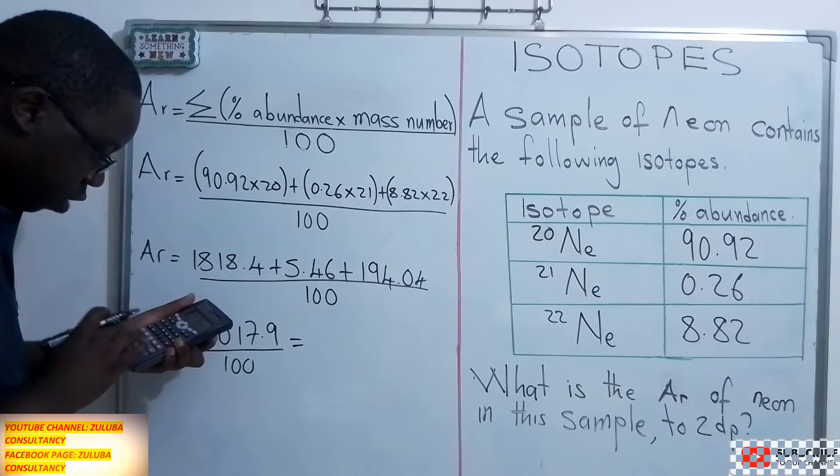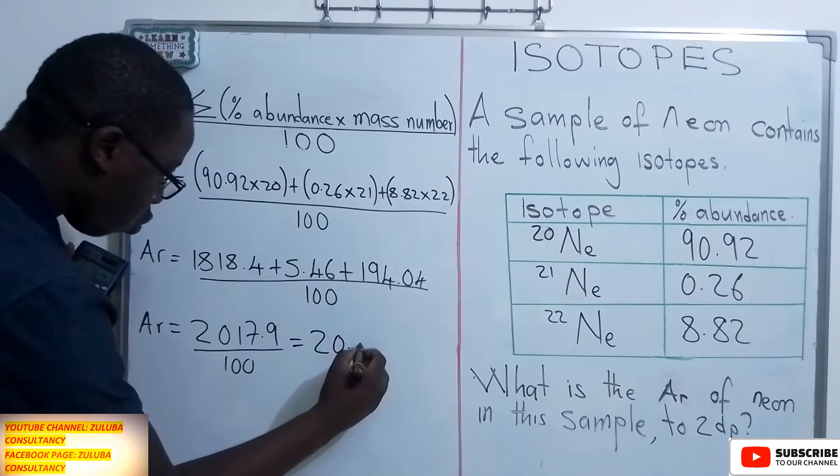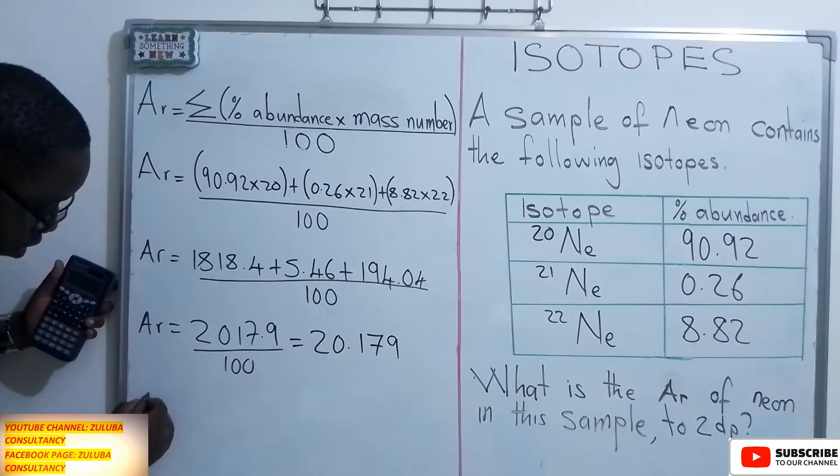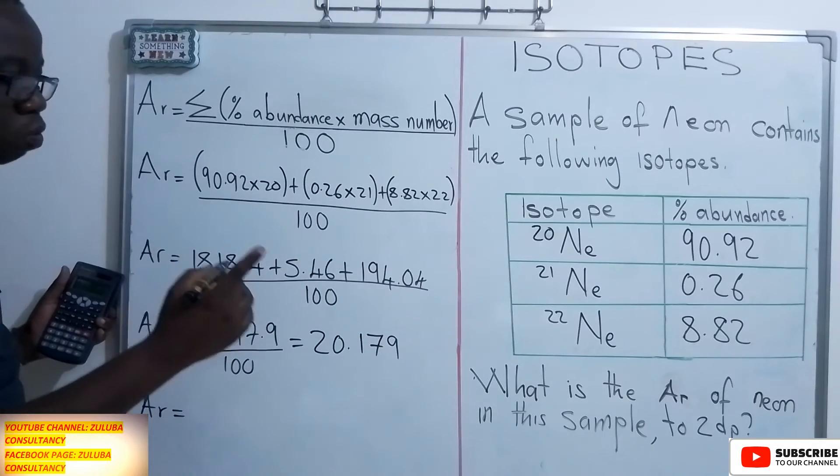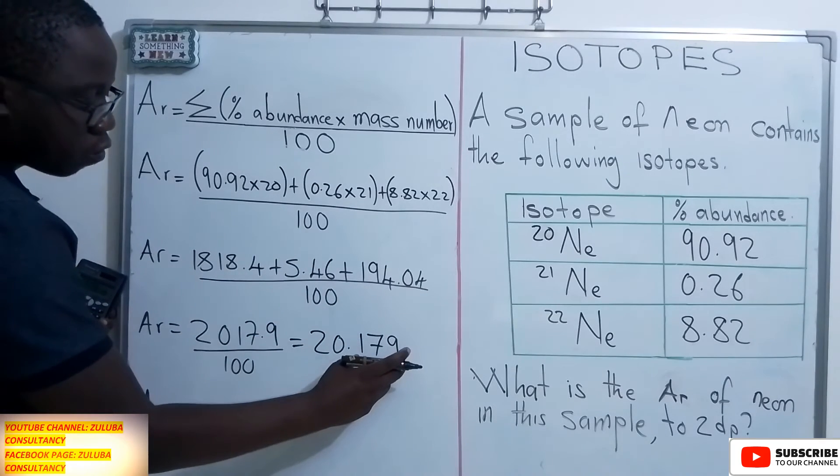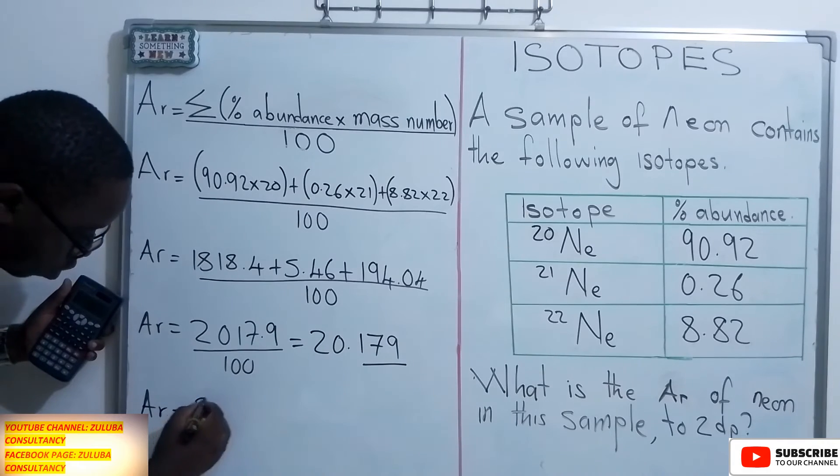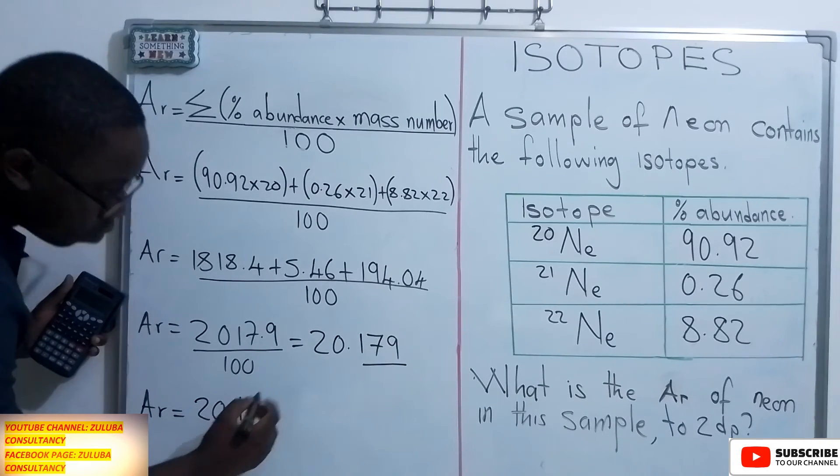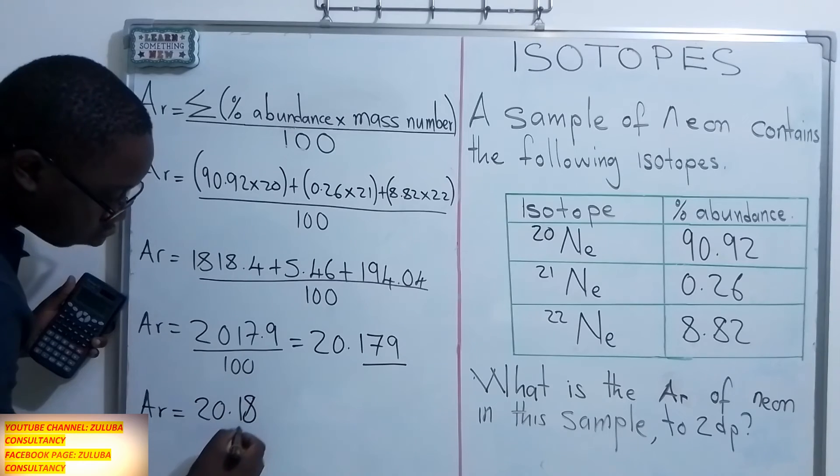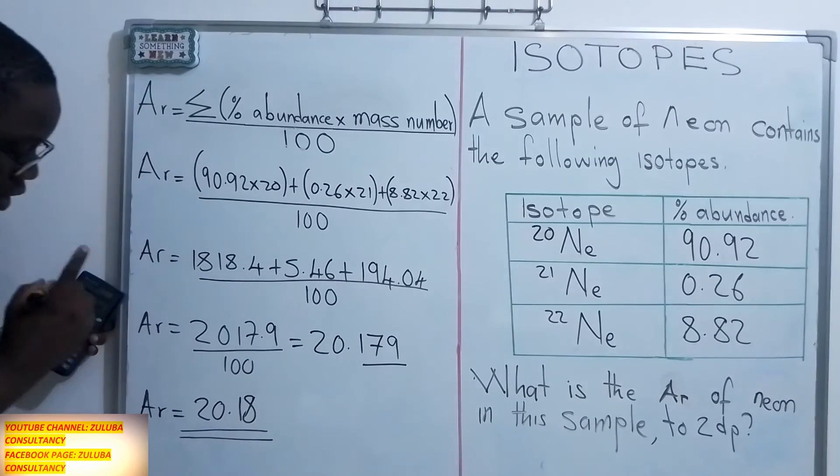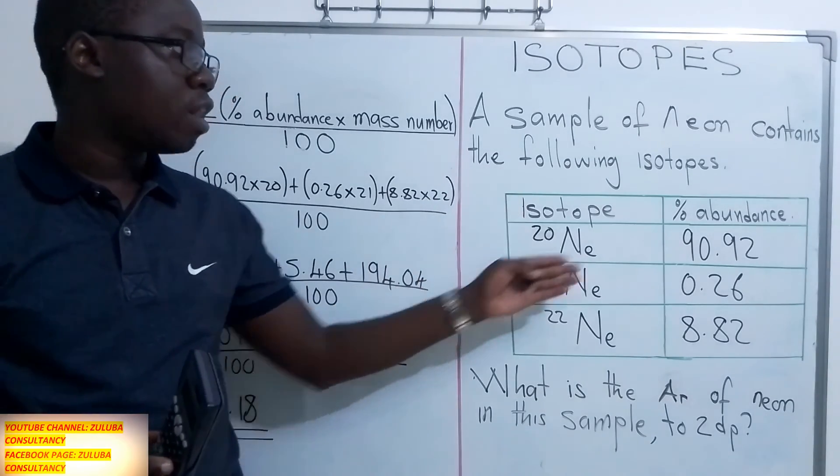it is going to give us the answer of 20.179. Now, remember the question has asked us that we should put our answer in 2 decimal place. So we need to round off this number here and have only 2 decimal places. So it will be 20.18. Because this number is 9, then it will affect the next number and it will change to 8. So this becomes the relative atomic mass of neon with these isotopes and their percentage abundance.